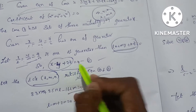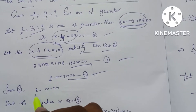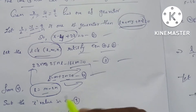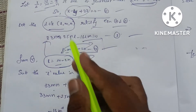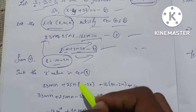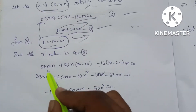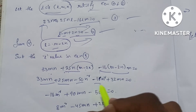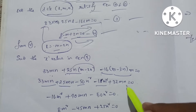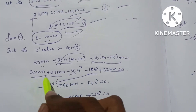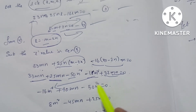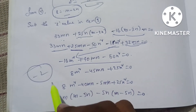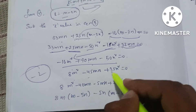Equation 2 gives l − m + 2n = 0, so equation 4: l = m − 2n. Substituting the l value into equation 3: 33mn + 25n(m − 2n) − 16(m − 2n)m = 0. Expanding: 33mn + 25mn − 50n² − 16m² + 32mn = 0, which simplifies to −16m² + 90mn − 50n² = 0. Dividing by −2: 8m² − 45mn + 25n² = 0.